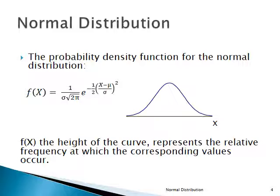If you wanted to compute the area under the curve between one value of X and another, you could use calculus and do an integral — but those values have all been tabulated for us, so we'll have a much easier time than if we had to remember our calculus. Basically, the normal distribution is defined by two parameters: mu and sigma. How many normal distributions are there? Infinite — any mu-sigma combination can give you a normal distribution.